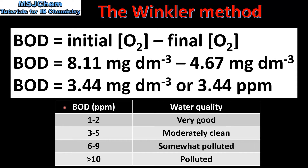To end the video, we look at the relationship between BOD and water quality. A BOD of 1 to 2 ppm indicates very good water quality. A BOD of 3 to 5 ppm means the water is moderately clean. A BOD of 6 to 9 ppm means the water quality is somewhat polluted. A BOD of greater than 10 ppm means the water is polluted.